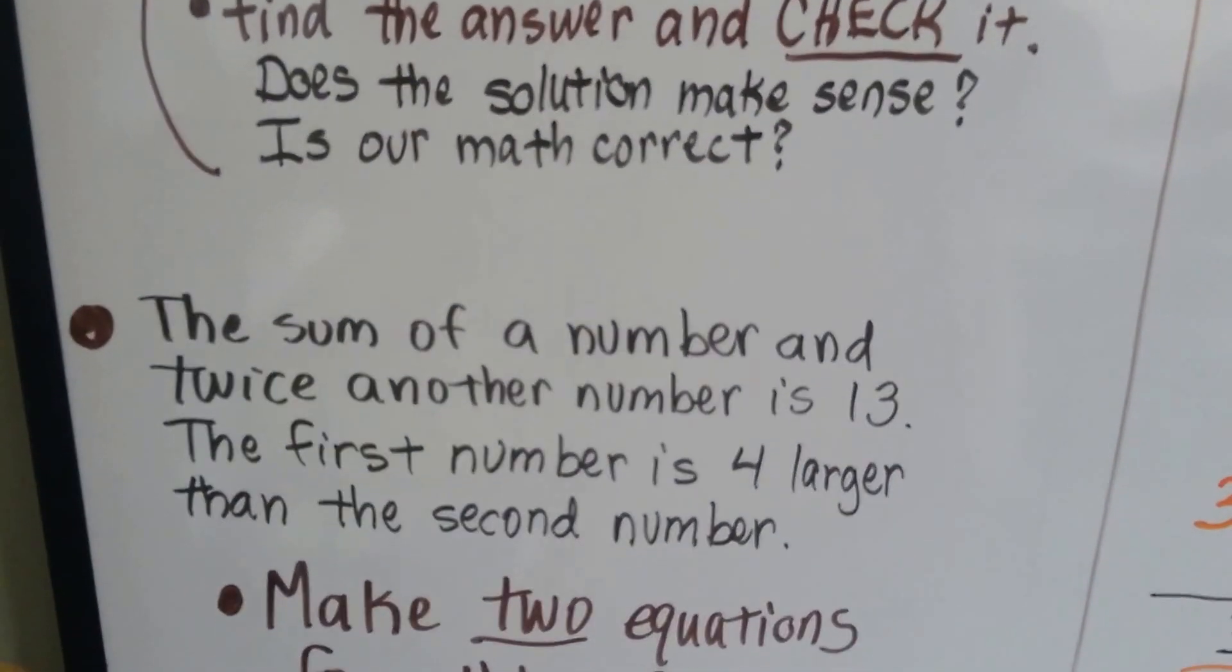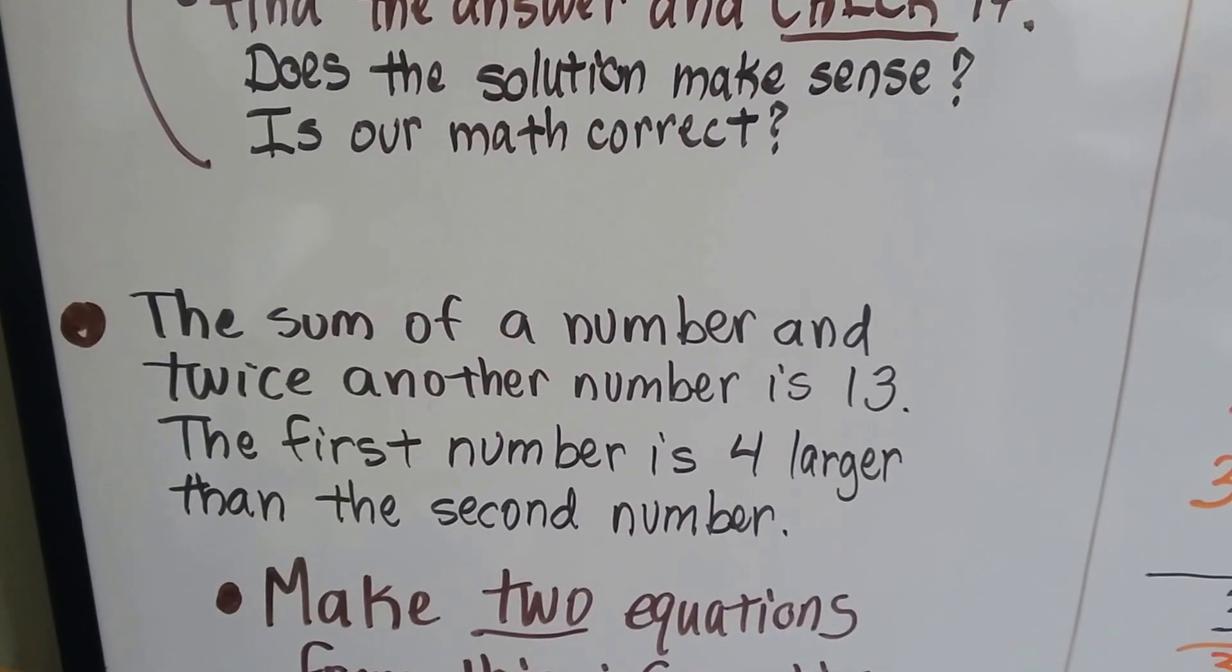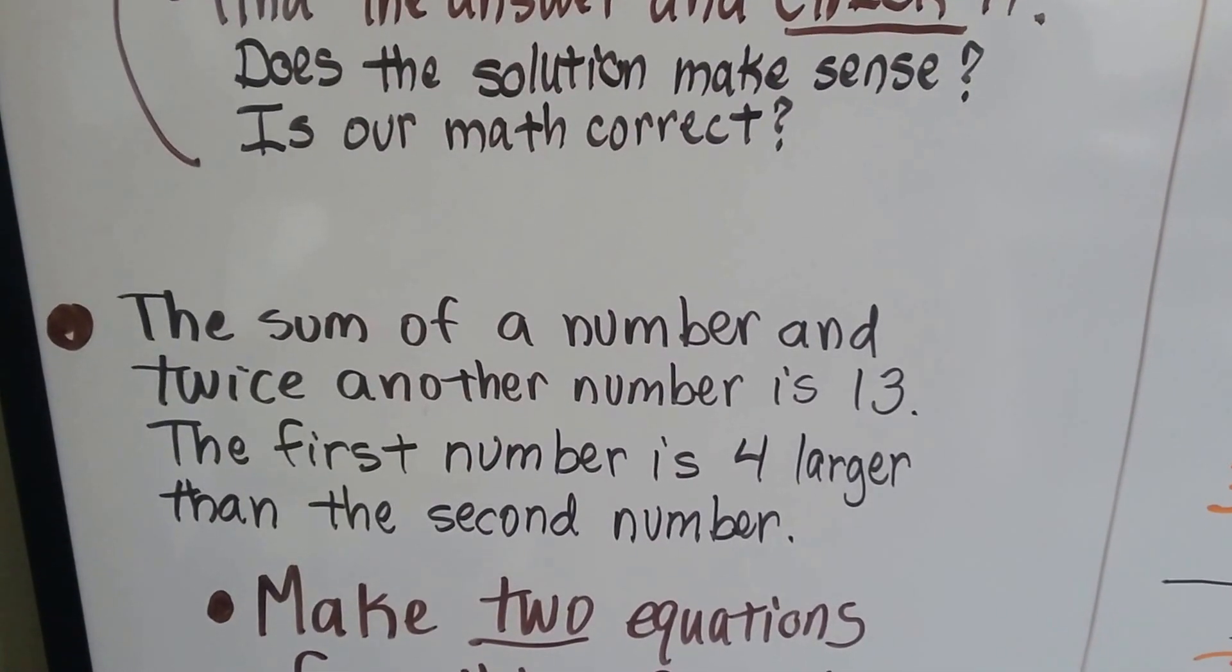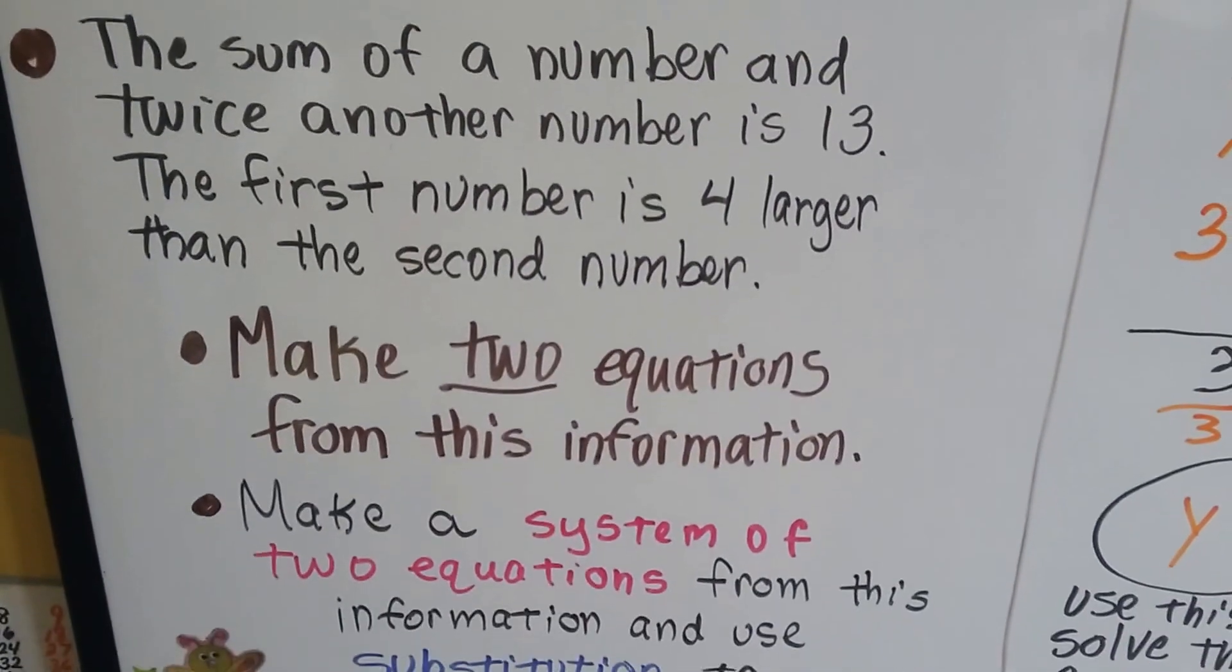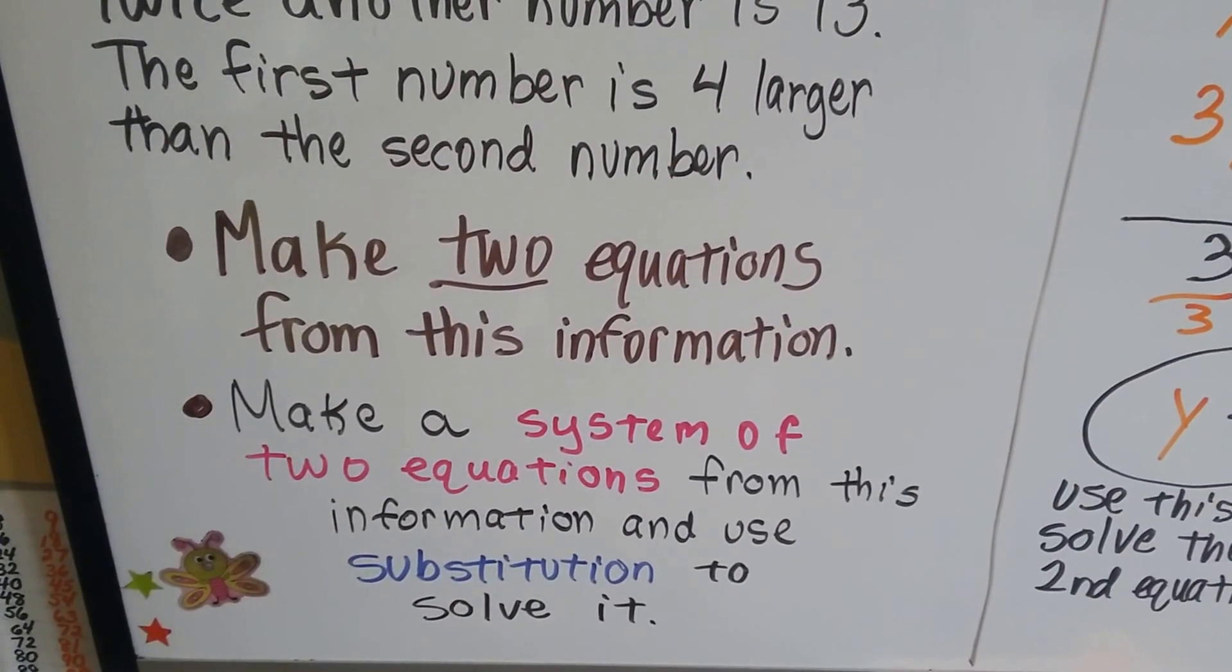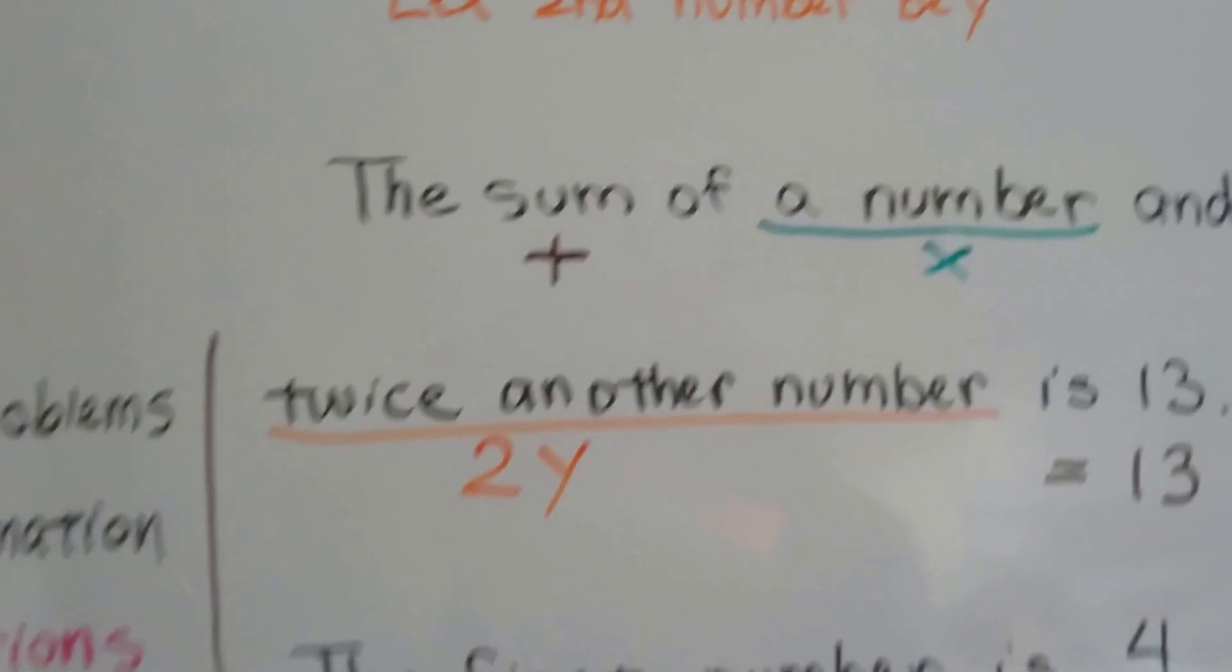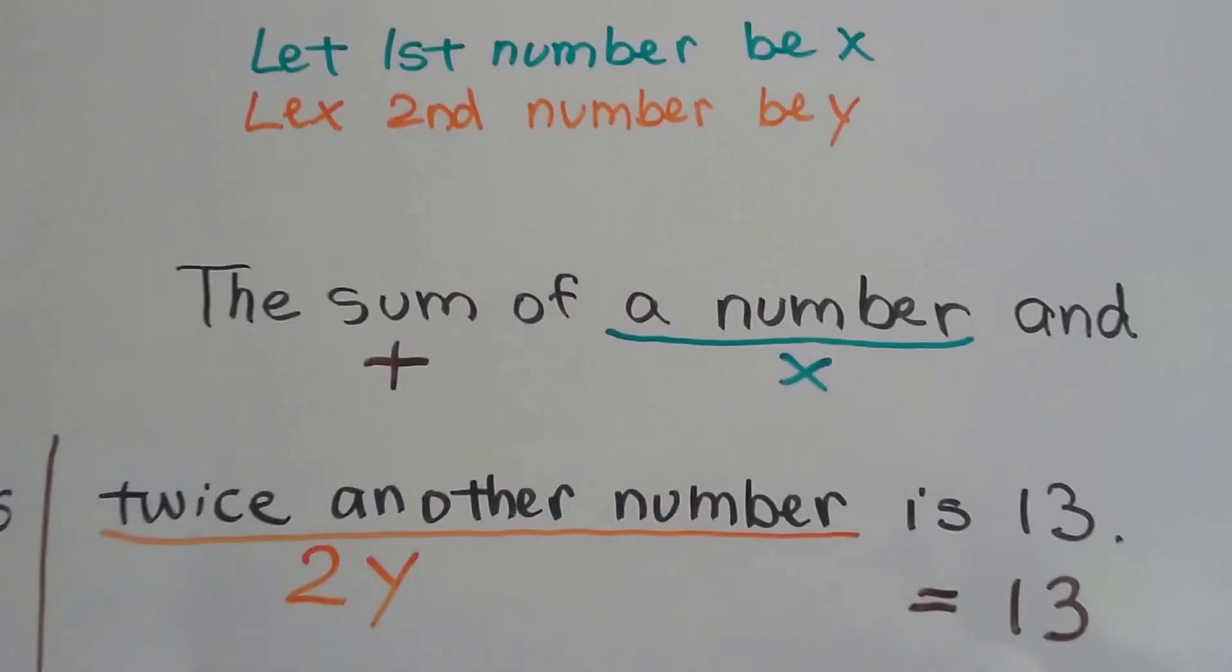So if we have the sum of a number and twice another number is 13, the first number is 4 larger than the second number, we make two equations from this information. We make a system of two equations from this information and we use substitution to solve it. So what we're going to do is let the first number be x and the second number be y. And that's going to help us.